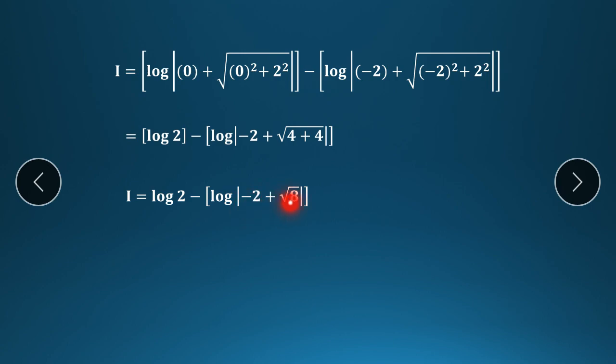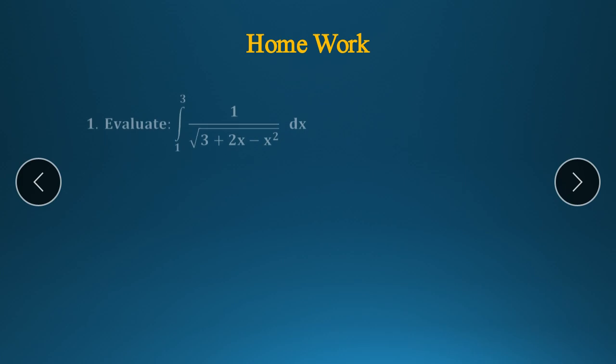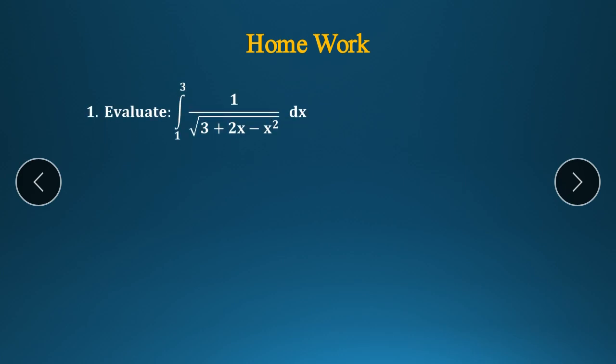So: log 2 − log|−2 + √8|. This is the final value of the given integration I. In this way, in this video we solved all examples by finding the third term. A homework example of the same type is also given.